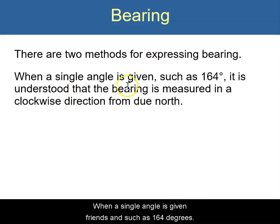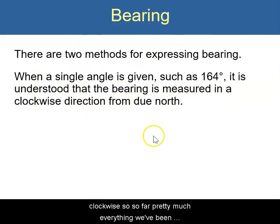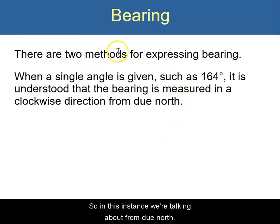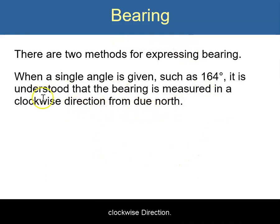So when a single angle is given — for instance, such as 164 degrees — it is understood that the bearing is measured in a clockwise direction. So far, pretty much everything we've been doing has been counterclockwise. In this instance, we're talking about from due north, an angle of 164 degrees in a clockwise direction.